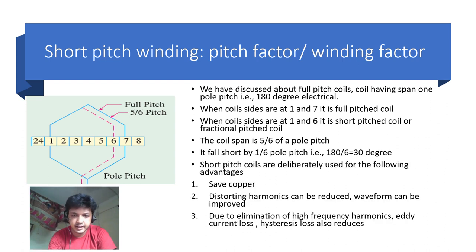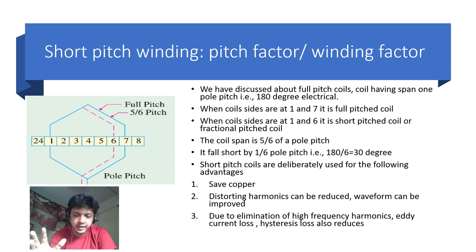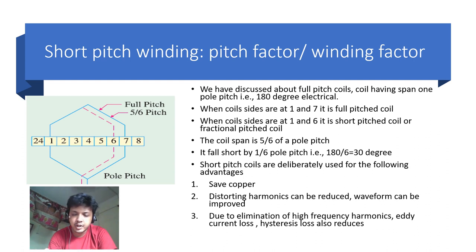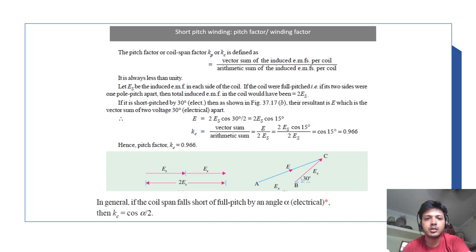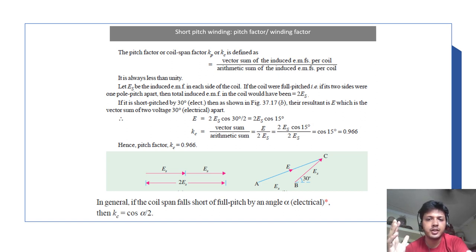The coil span is 5/6 of the pole pitch, falling short by 1/6 of the pole pitch, that is 30 degrees electrical. Short-pitch coils are deliberately used for the following advantages: it saves copper as less conductor material is required; distorting harmonics can be reduced and the waveform improved; and due to the elimination of high-frequency harmonics, hysteresis loss and eddy current loss are also reduced. The pitch factor or coil span factor Kc is defined as the ratio of the vector sum of the induced EMF per coil to the arithmetic sum of the induced EMFs of the coil sides, and it is always less than unity.